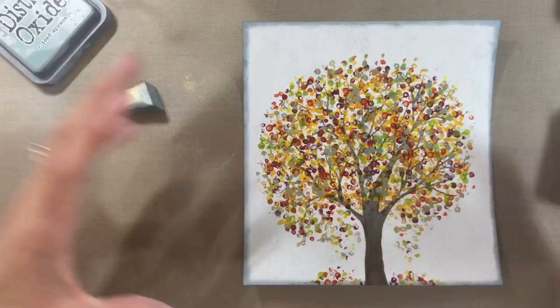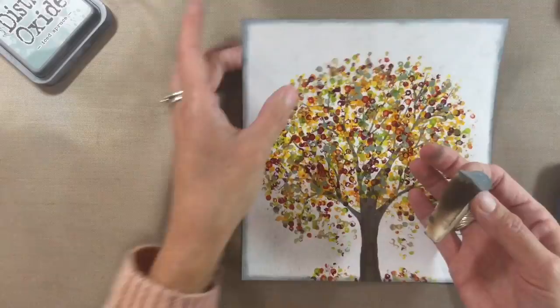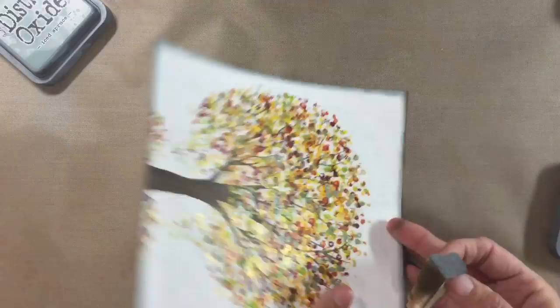So I'm just going to add another layer of distress oxides, this time using walnut stain. You know how I like my double layers. And again, it just darkens it and just adds a really nice touch. So I've added both borders now, the iced spruce and the walnut stain. And I just love how that looks.